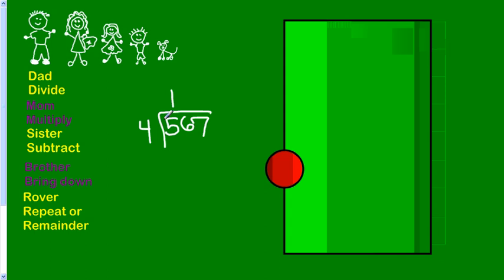And so you would do that. And then you say 1 times 4 is 4. Do your subtraction. Remember, sister helps you subtract. And that's 1. Brother says, hey, bring down. Bring down your 6 to make 16.